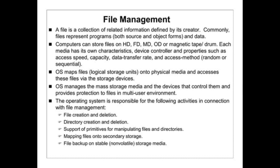File management: a file is a collection of related information defined by its creator. Files commonly represent programs in both source and object forms, and data. Computers can store files on HD, FD, MD, OD, or magnetic tape and drum. Each media has its own characteristics such as access speed, capacity, data transfer rate, and access method — random or sequential. The operating system maps file logical storage units onto physical media. The OS manages mass storage media and the devices that control them, and provides protection to files in multi-user environments.